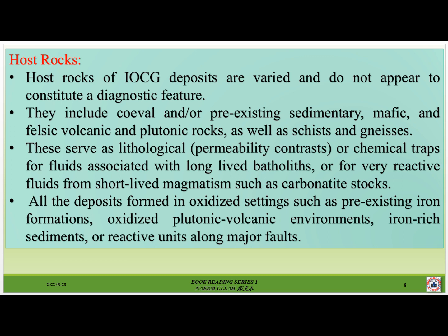Host rocks of IOCG deposits are varied and do not appear to constitute a diagnostic feature. They include coeval and/or pre-existing sedimentary, mafic and felsic volcanic, and plutonic rocks, as well as schist and gneisses. These serve as lithological permeability contrasts or chemical traps for fluids associated with long-lived batholiths, or for very reactive fluids from short-lived magmatism such as carbonatite stocks. All the deposits formed in oxidized settings such as pre-existing iron formations, oxidized plutonic-volcanic environments, iron-rich sediments, or reactive units along major faults.